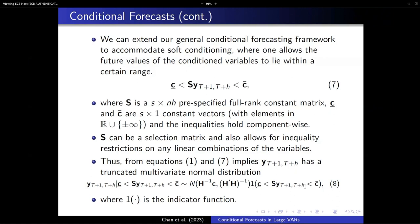We extend our conditional forecast framework to include soft conditioning — placing an interval on the conditional variables, which is equation seven. As a result, we now draw from a multivariate truncated normal distribution, as equation eight states. We therefore use the Botev method to simulate from this high-dimensional truncated Gaussian distribution.